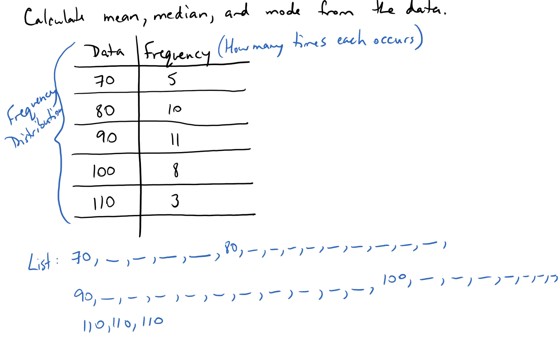So if I want the mean, for example, the mean would be the sum of all those, add them all up, divided by how many there are. Now I could use my list to do that, but that would be absurd. Why would I want to add five 70s and 10 80s, 11 90s, et cetera? So my sum is simply going to be, well, five 70s is precisely 70 times five.